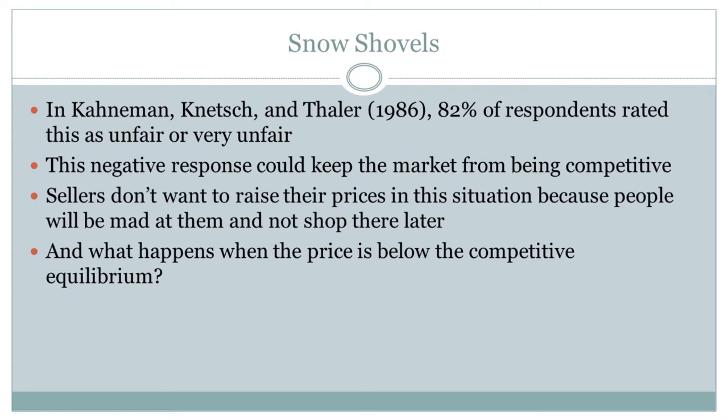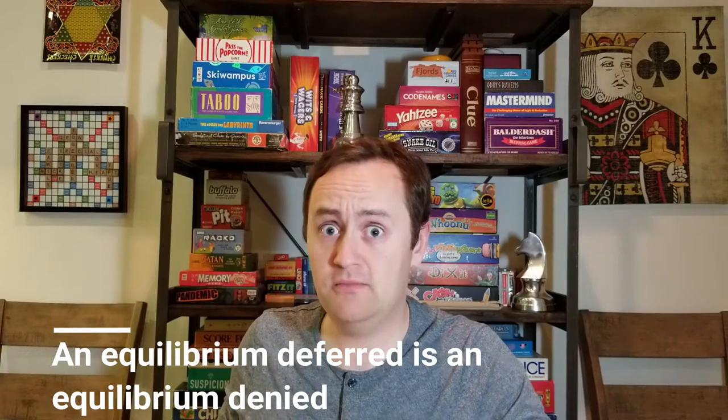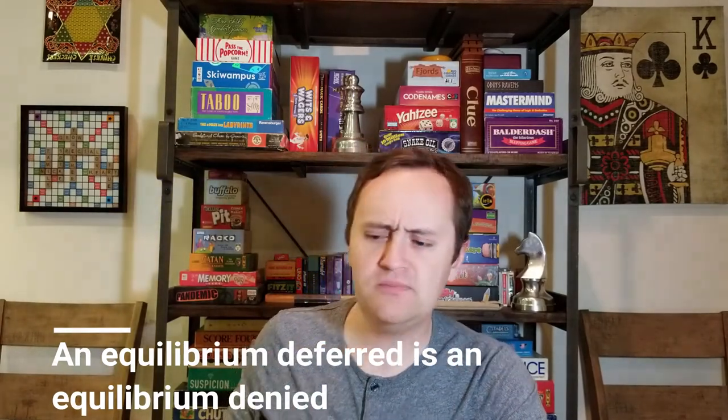So you can imagine waking up, looking at all the snow, thinking people are going to want snow shovels and you can charge as much as you want. But then you think: if I do that, people will be angry at me and retaliate against me later. So instead, you decide not to adjust your prices. But keeping from adjusting your prices basically means you're not going to allow the market to determine what the price of snow shovels should be. You're taking some outside-the-market factor — worrying about retaliation — and not allowing that rightward shift in demand to result in the rise in prices you'd expect at equilibrium.